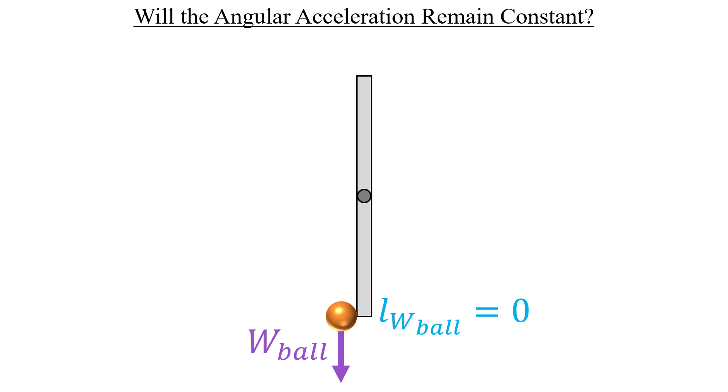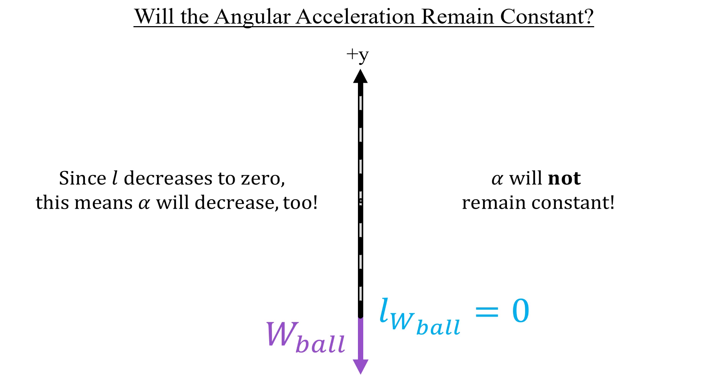So using these approximations, a more accurate picture might look something kind of like this, where the force of the weight of the ball will line up exactly with the axis of rotation, resulting in a lever arm length of zero. And this is important because if the lever arm gets smaller, then the angular acceleration has to shrink as well. It can't remain constant. And that's all we really need to demonstrate for the answer to part B.